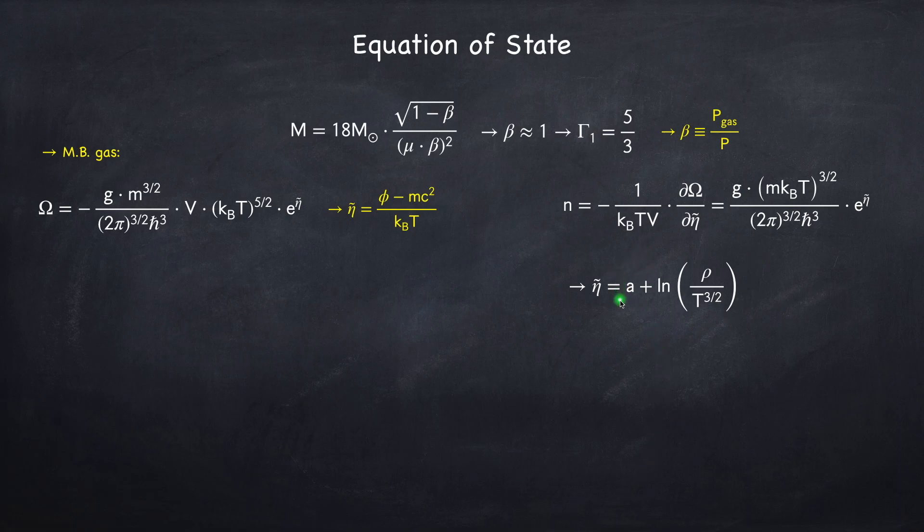So a here will be the log of all these constants times whatever constant multiplies the particle number density in order to get the mass density. We don't really care what it is, it's just to show the form of eta tilde.